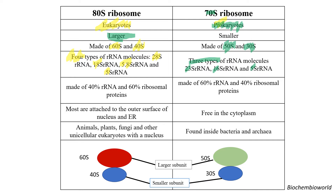The next question is: in what proportion do the ribosomal rRNA and proteins come together to form a ribosome? In the case of the 80S, 40 percent of the ribosome is ribosomal rRNA and 60 percent are ribosomal proteins. In the case of the prokaryotes, it gets reversed: 60 percent is ribosomal rRNA and 40 percent is ribosomal proteins.